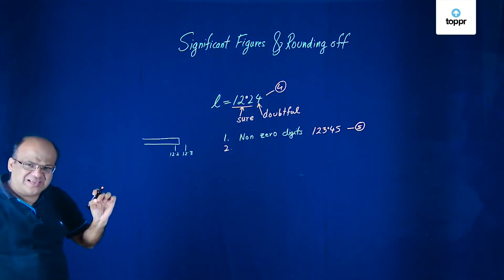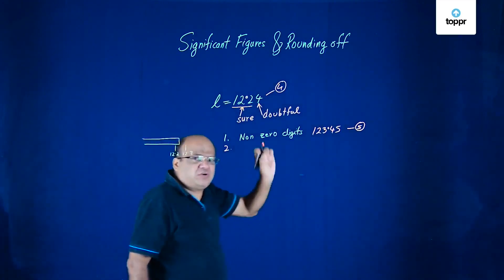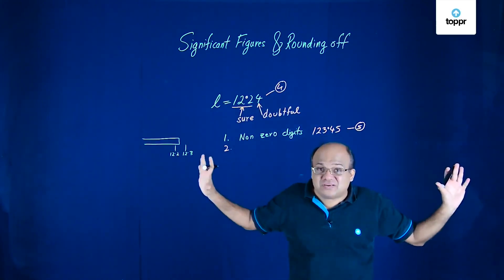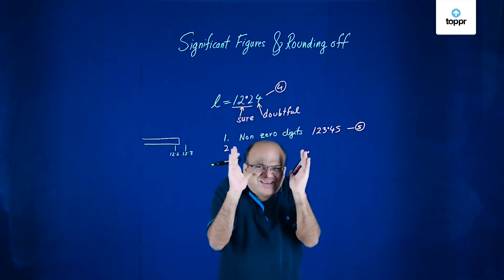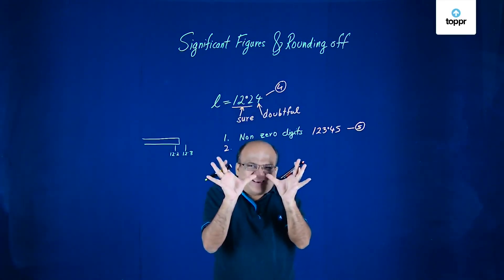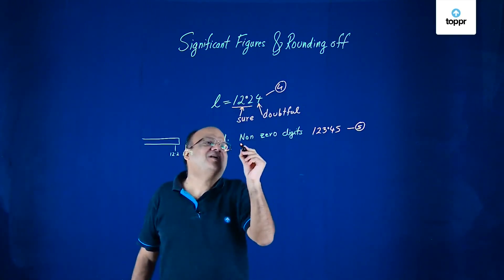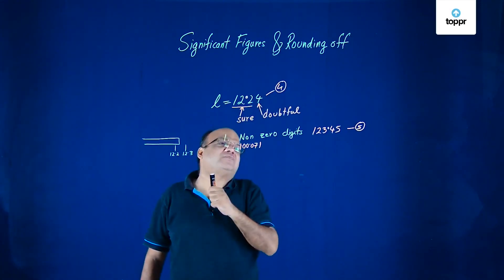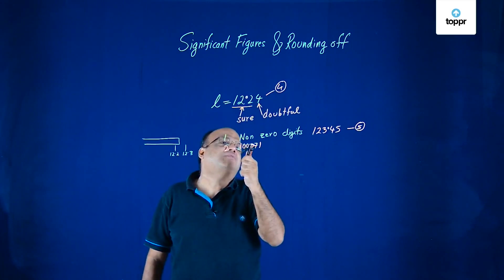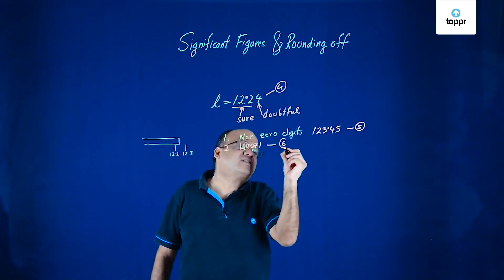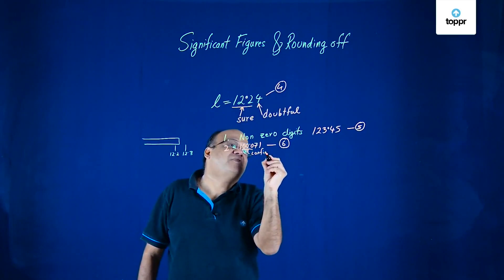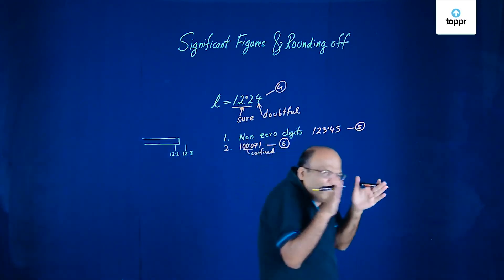Second rule: all zeros between non-zero digits — those are called confined zeros — are significant. Those zeros occur between non-zero digits, so they are there as significant digits. Suppose a measurement is 100.071 — how many significant digits are there? 1, 2, 3, 4, 5, 6. So we will say this has got 6 significant digits. Confined zeros are always significant because they occur between non-zero digits.